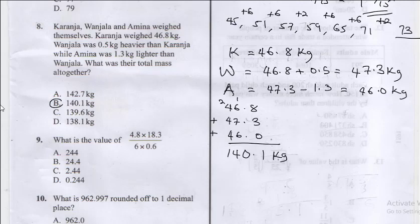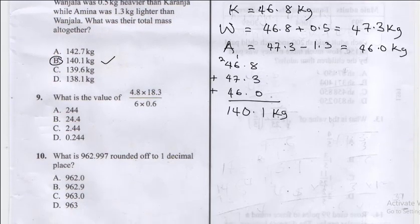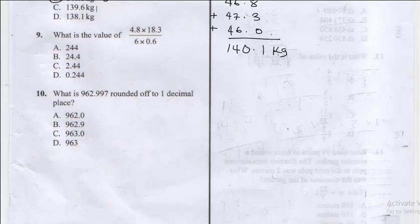So their total weight is 140.1 kg and the correct answer here is B. So having said that, the next question says what is the value of 4.8 times 18.3 divided by 6 times 0.6?